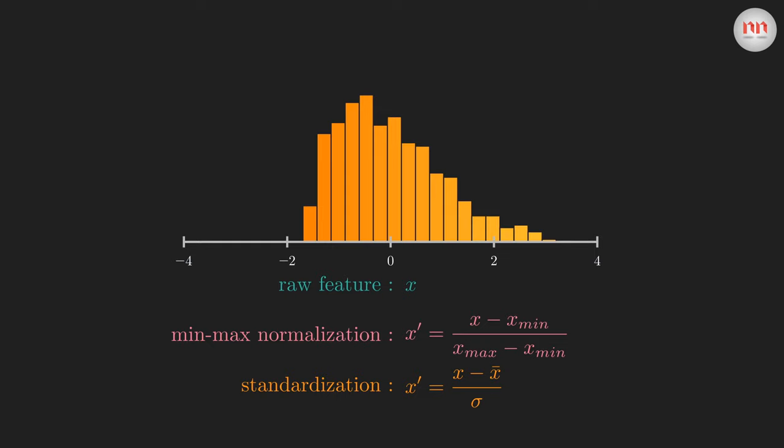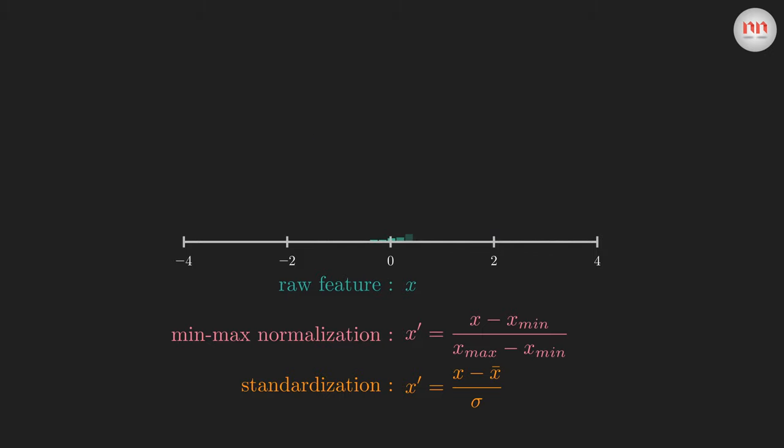Now, there's a huge misconception among beginners. That is, if we apply standardization, then it makes the distribution a normal distribution. This is simply not true. Don't believe me? Let's take a very skew distribution. If we apply standardization on this distribution, you see, the shape doesn't look like a normal distribution, does it?